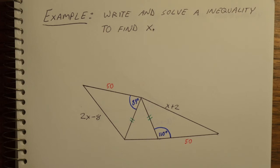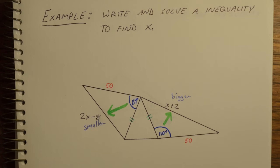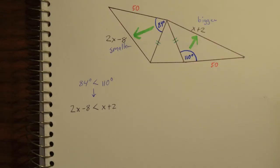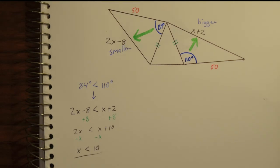Next, write and solve an inequality to find X. We have three triangles, though we don't really need the middle isosceles triangle — it only gives us information about those congruent green sides. We have the green sides, the 250s, and the blue angles. Using the SAS Inequality, since angle 84° is less than 110°, we can state that 2x − 8 must be less than x + 2. Solving this inequality, we find that x must be less than 10.